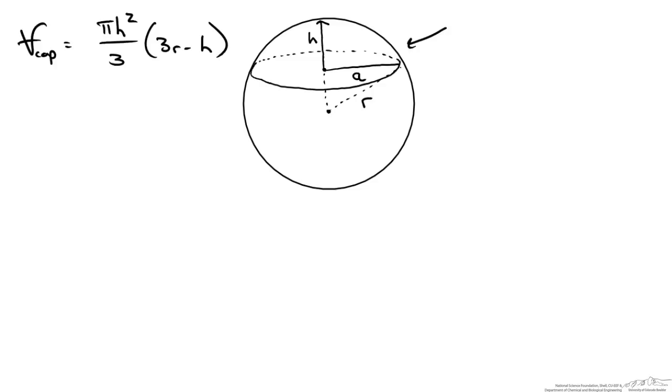Now this r is the radius of our baseball, and h is the height above the surface of the water to the top of the sphere. Now we do not know the volume of this cap, but we do know the volume of the sphere. We also know the volume that is submerged.